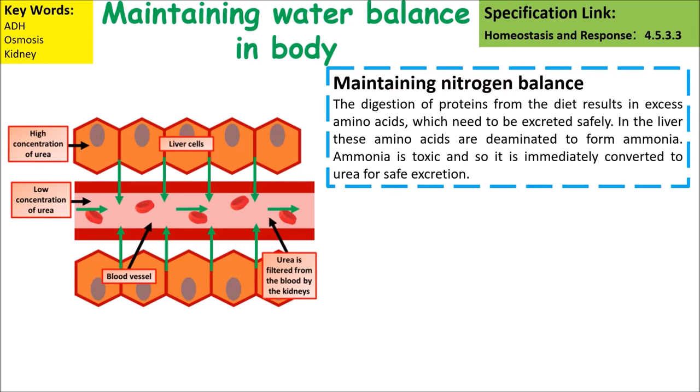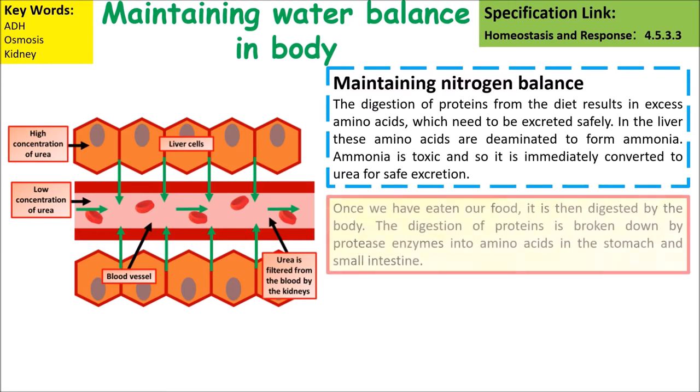In the liver, these amino acids are deaminated to form ammonia. Ammonia is toxic, so it is immediately converted into urea for safe excretion.